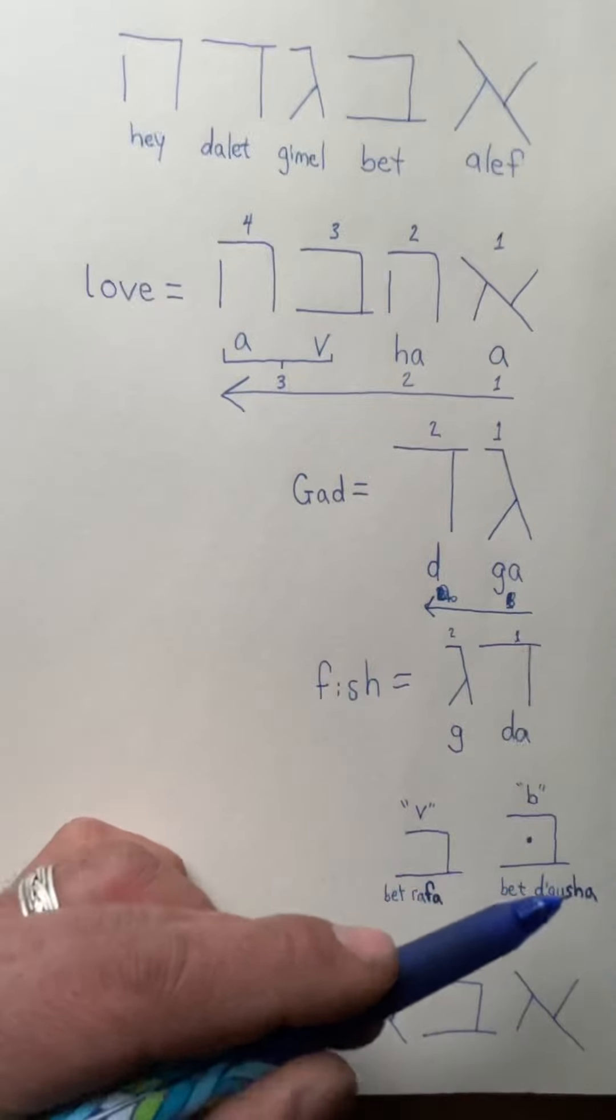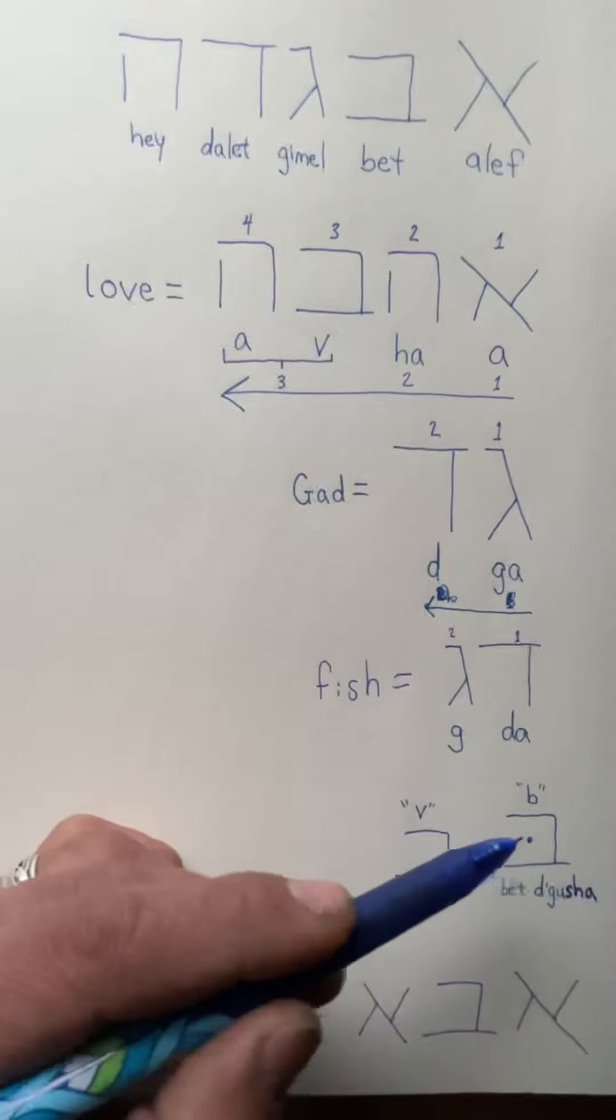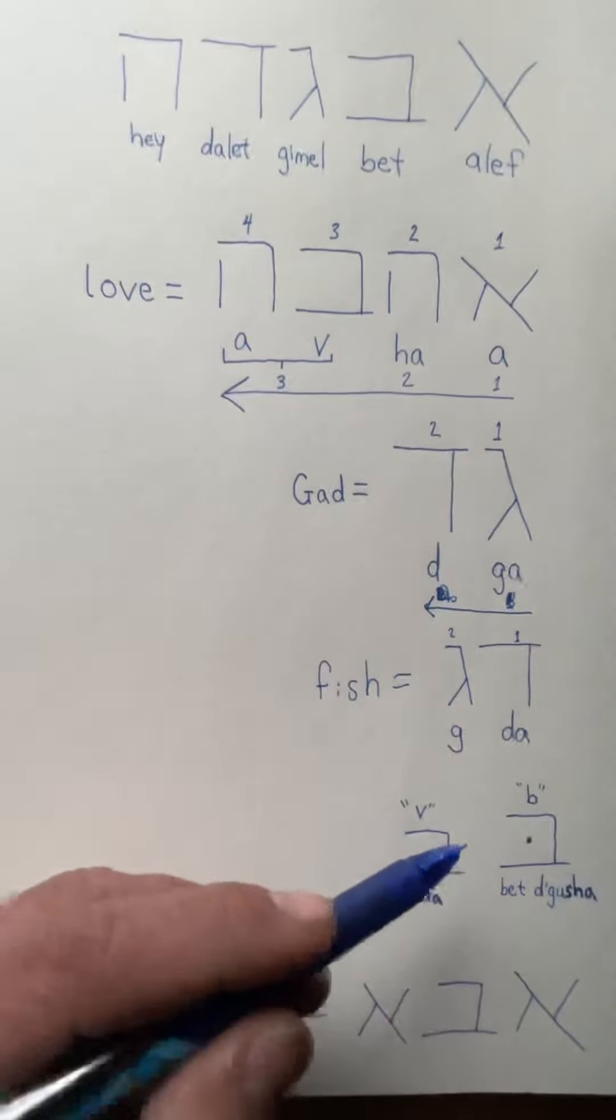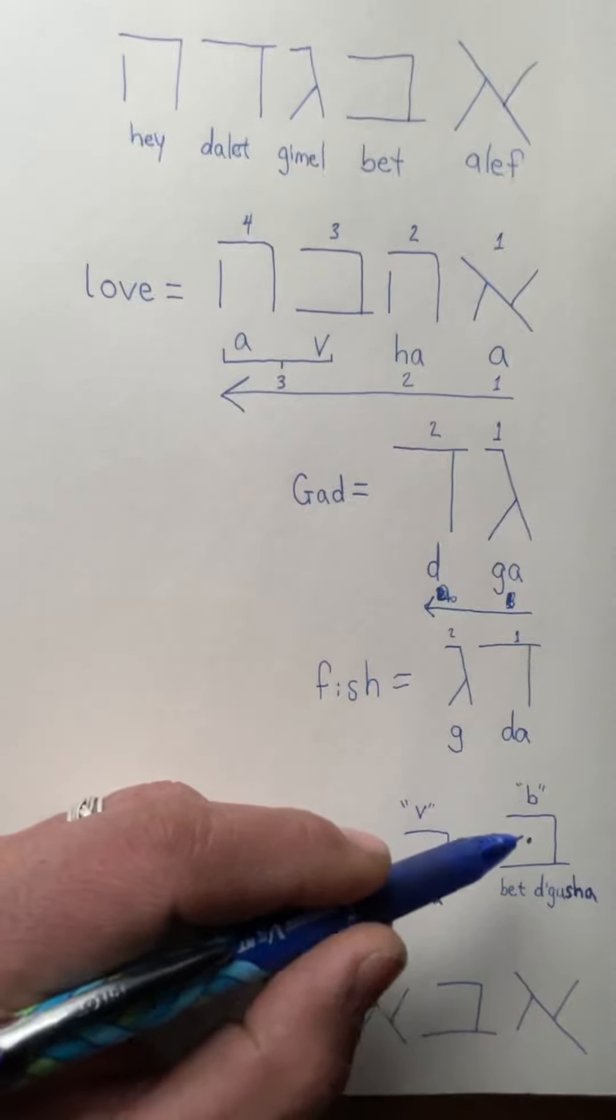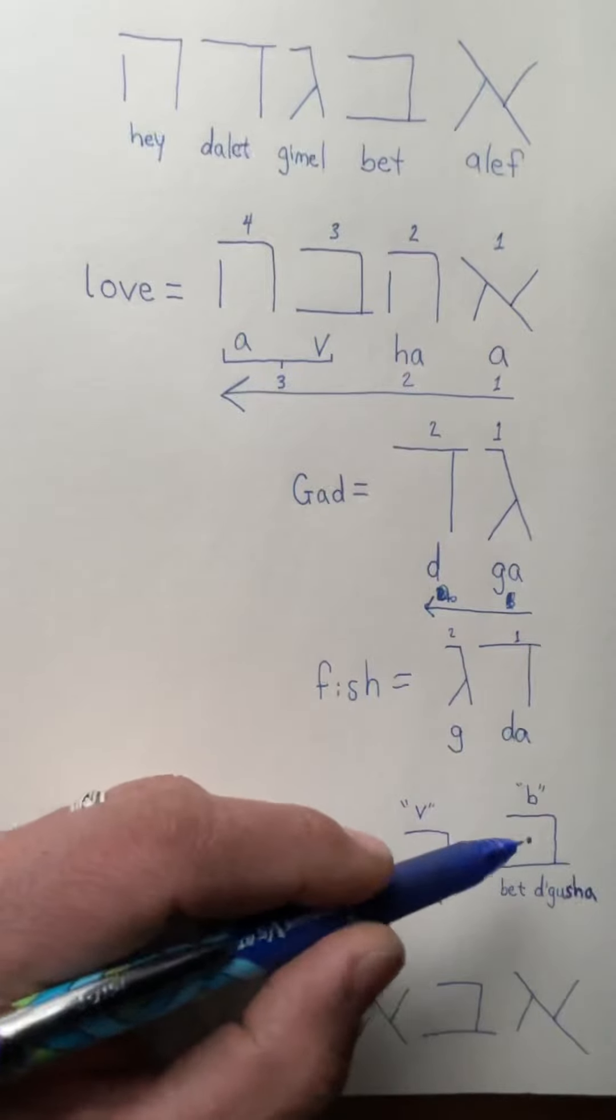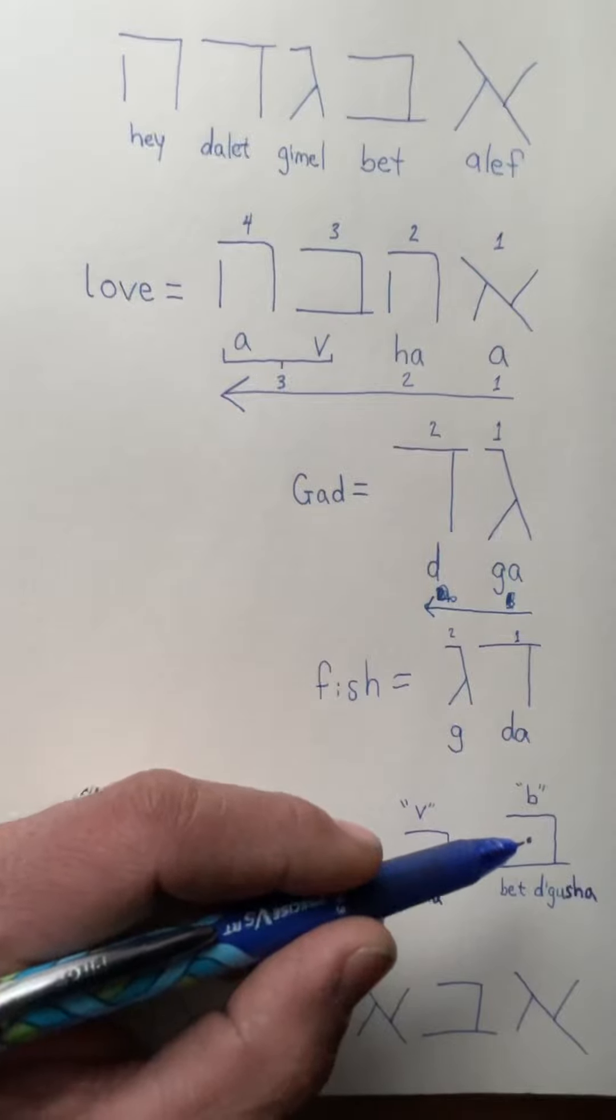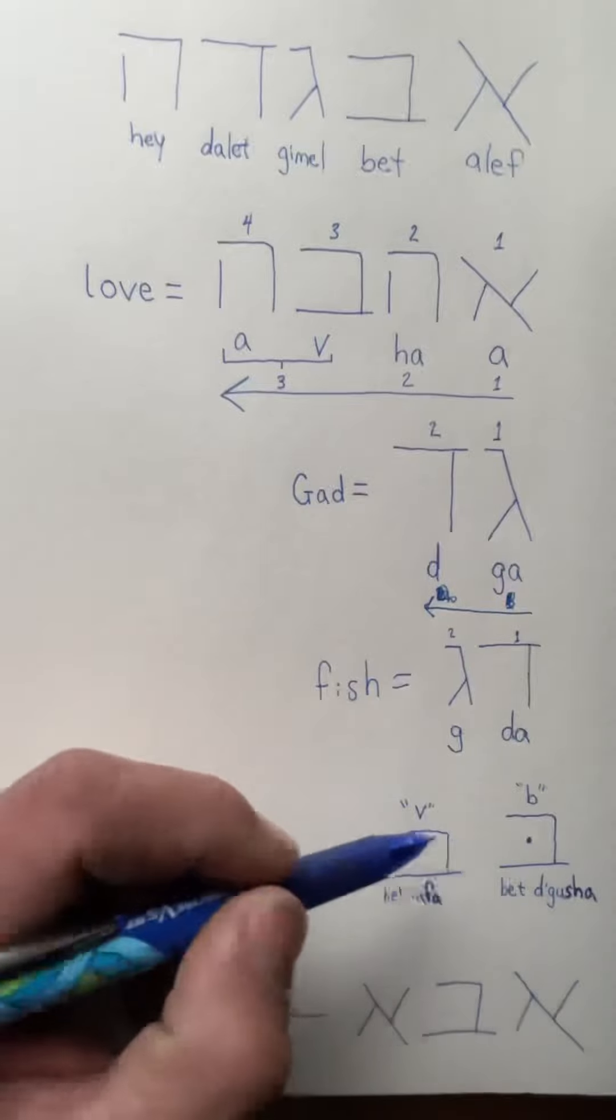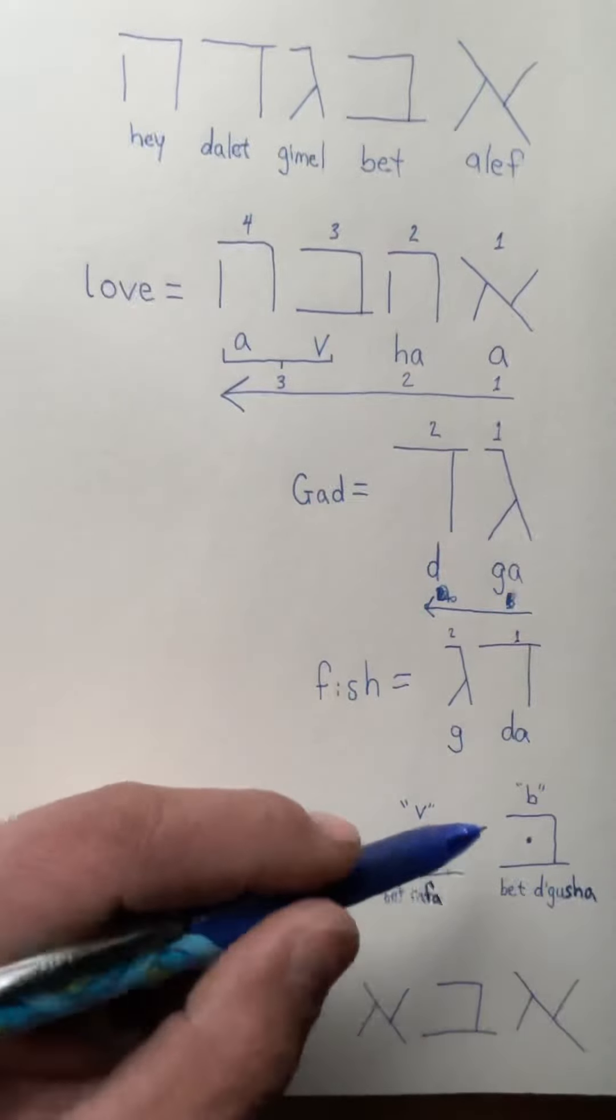This is the dagesh, the nikud, the symbol - nikud actually means dot, but some nikud aren't just dots, they're also lines. In Hebrew, this nikud, the dagesh, it's put in three different letters to tell us how to pronounce it, either B or V. So in the Bible you look for the symbol and you know when to pronounce it as B or V.